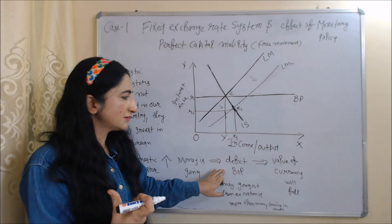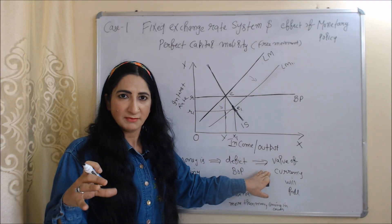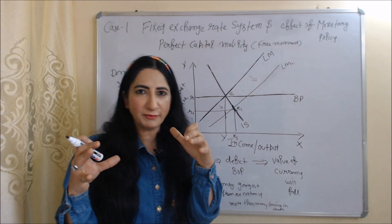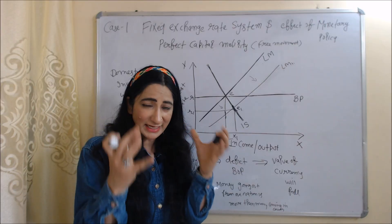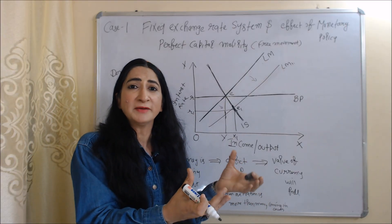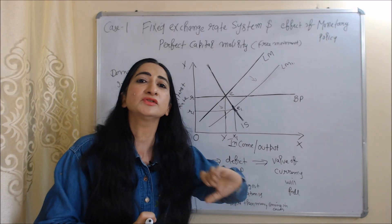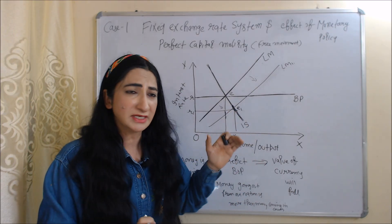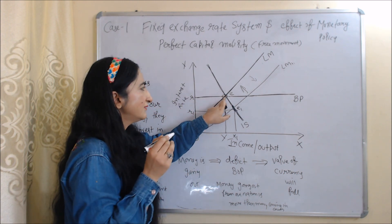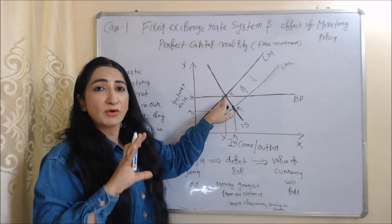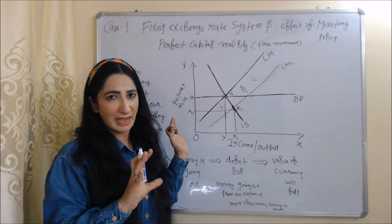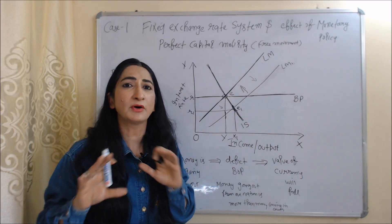When balance of payment becomes deficit, it will reduce our currency value. Because we are working under the fixed exchange rate system, the central bank will try to maintain it and protect our currency. In order to protect our currency value, the central bank will reduce money supply, so our LM curve will shift back from LM1 to LM, and we come back to our original equilibrium point E. So we can say that under the fixed exchange rate system, our monetary policy is not effective.